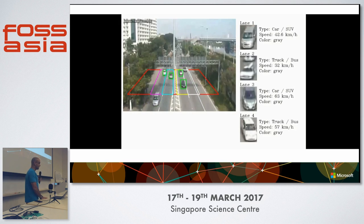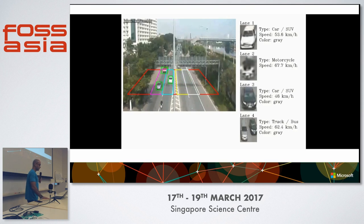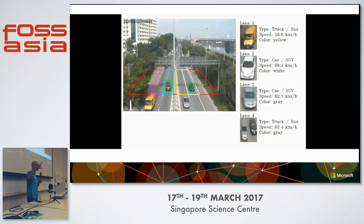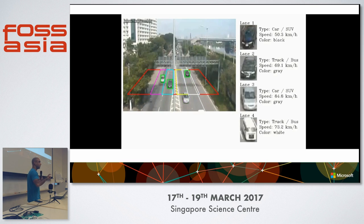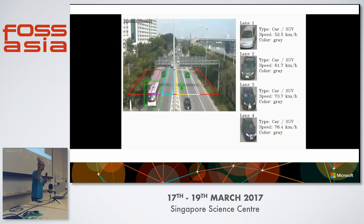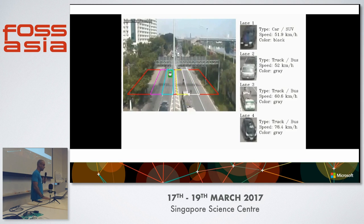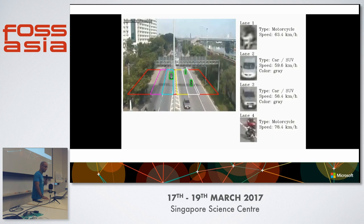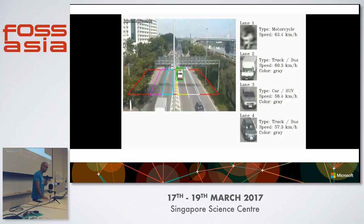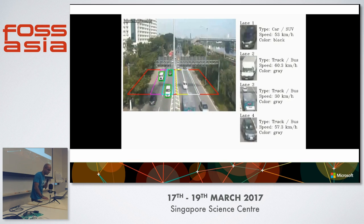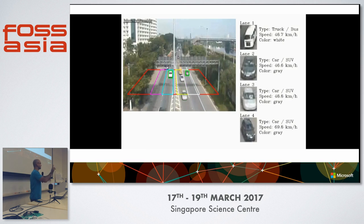This is vehicle tracking. There's a space where vehicle types are classified, and there's a velocity and color prediction made as well. Everything we're seeing is real-time — this is meant to be a real-time system.